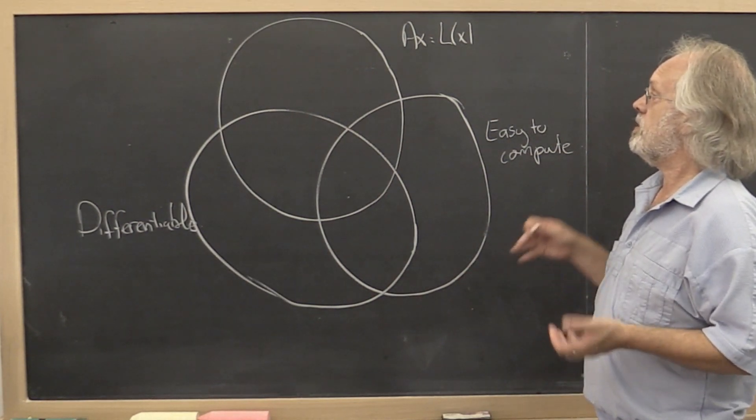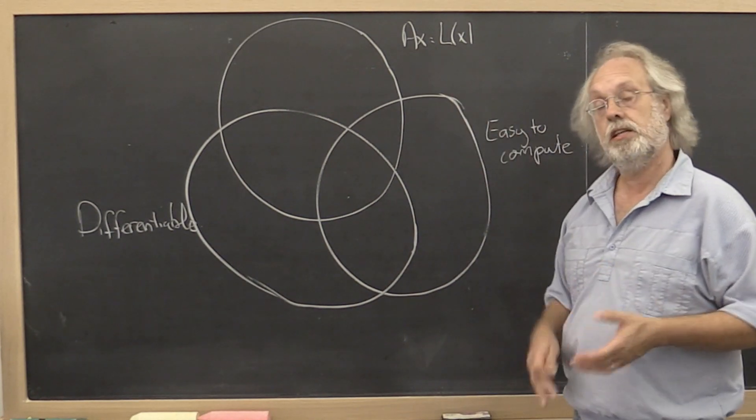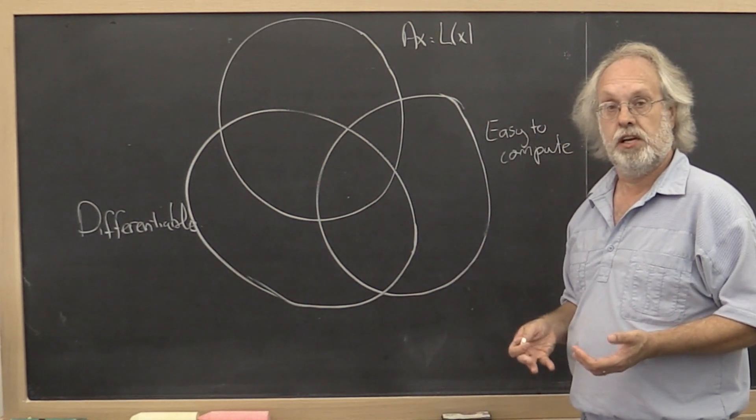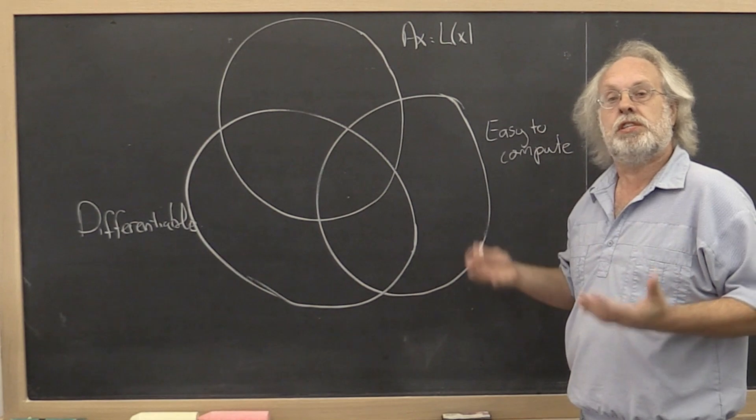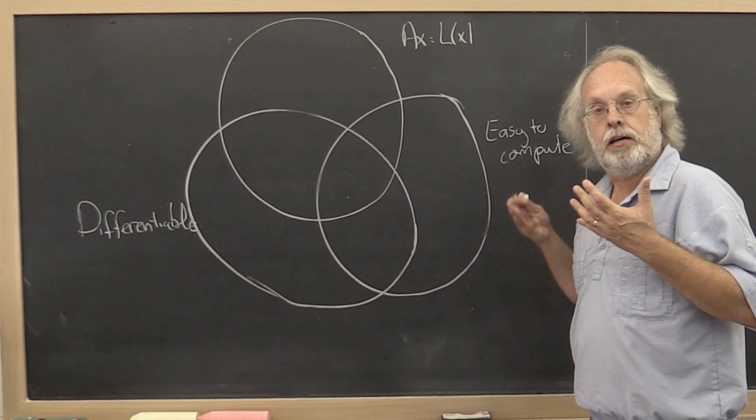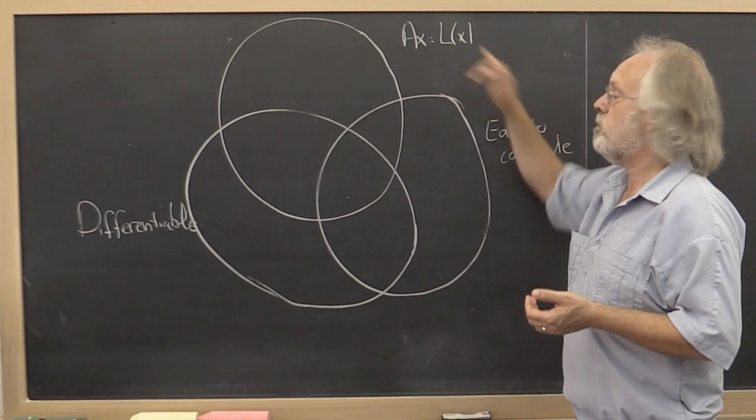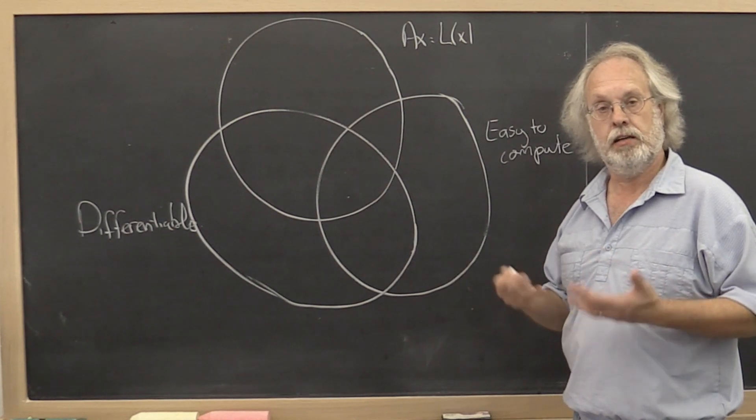some matrix norms have the property that in measuring the magnitude of the matrix, that magnitude somehow has meaning when it comes to the magnitude of the underlying linear transformation.